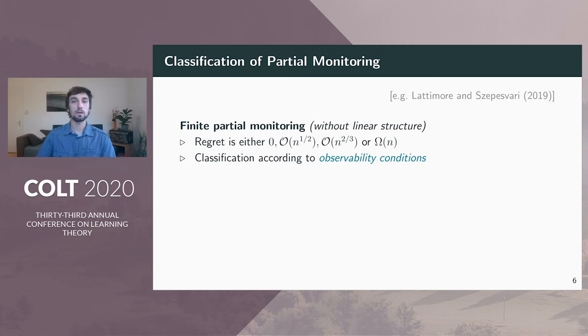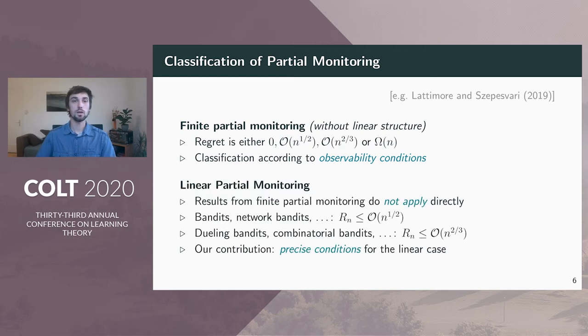But before getting to the bounds, let's have a look at what we know already. For finite partial monitoring without the linear structure, there's a classification result that says the regret can only be constant, square root n, n to the two-thirds or linear. And these rates depend on precise observability conditions. Unfortunately, these results do not directly extend to the linear setting. We showed that there are games in finite partial monitoring where the learner has constant regret, but the same game in the linear setting could be hard, having for example square root n to the third or even linear regret.